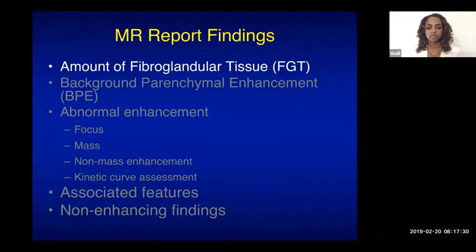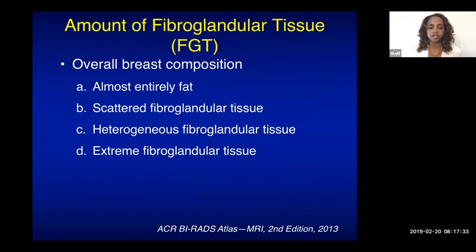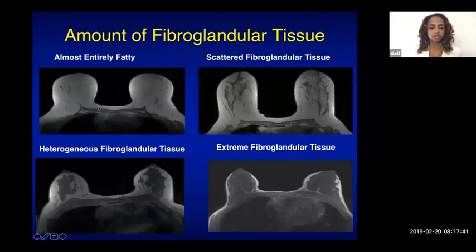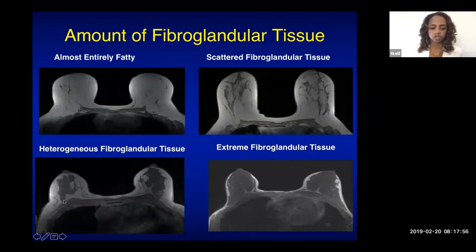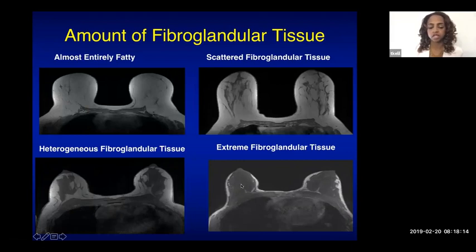The first thing to note in your report is the amount of fibroglandular tissue, described in four categories: almost entirely fatty, scattered fibroglandular tissue, heterogeneous fibroglandular tissue, and extreme fibroglandular tissue. An important advantage of MRI is that even in extremely dense breasts — where mammography would obscure underlying masses — if there is an enhancing mass, you will be able to see it on MRI.